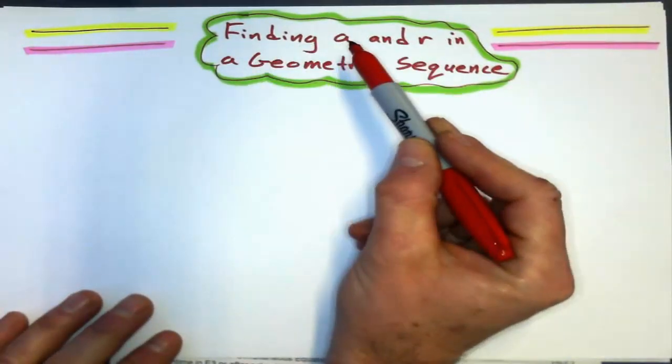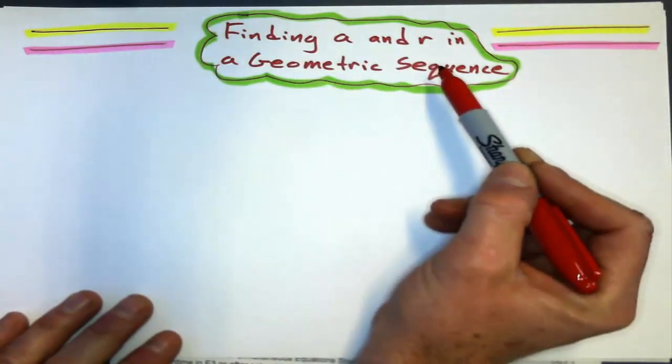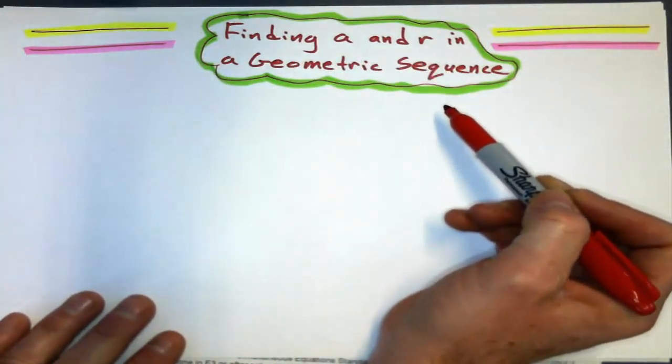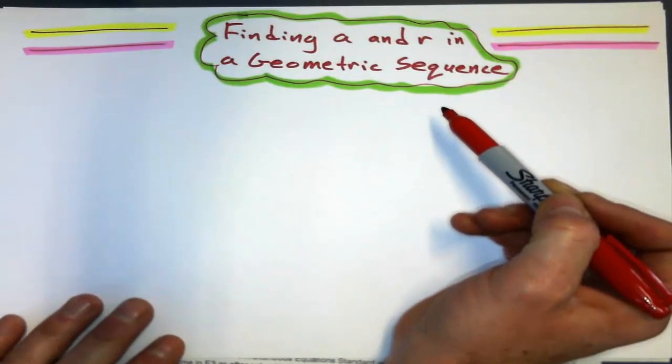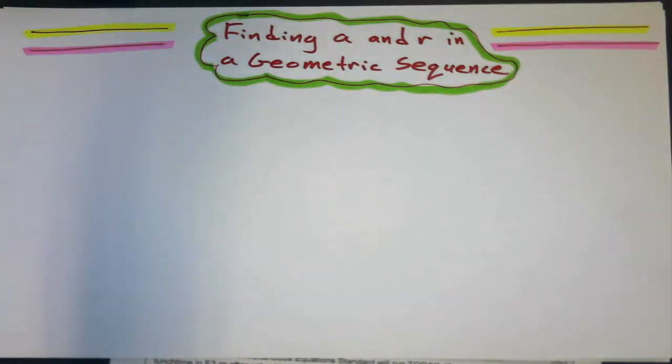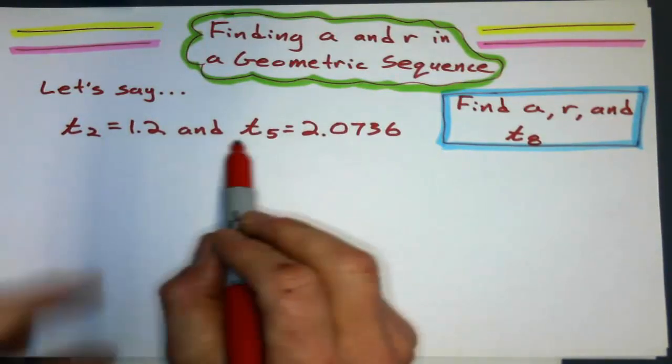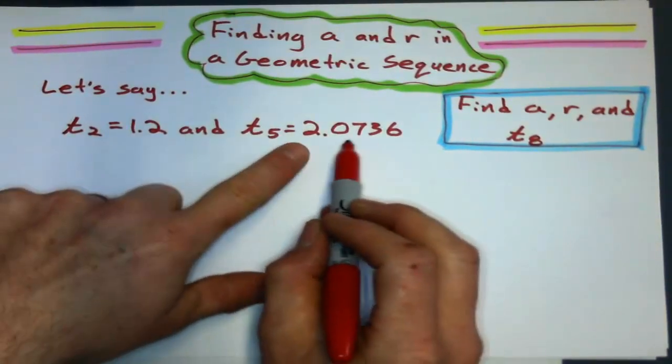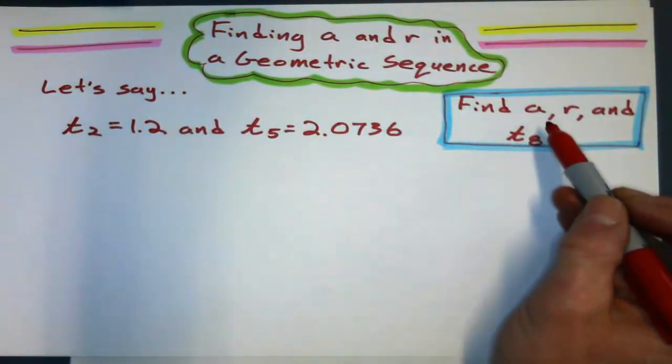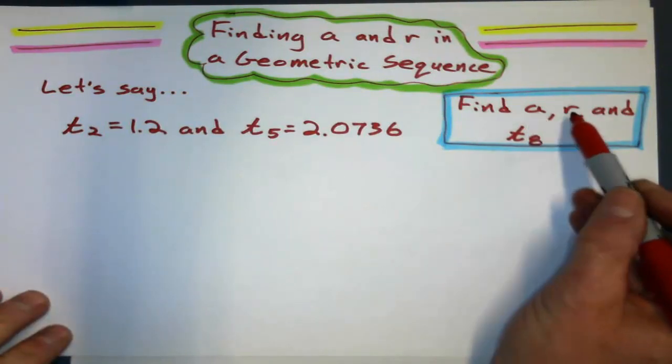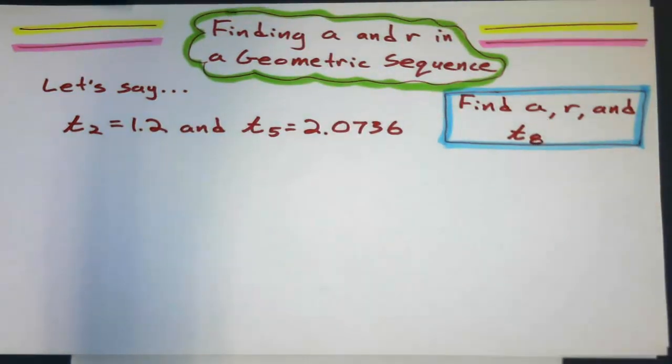Let's look at an example when we're going to find the first term and common ratio in a geometric sequence when I'm given two random terms in that sequence, like these two. So if I have this example here, second term is 1.2, fifth term is 2.0736, I want to find the first term, common ratio, and t₈.